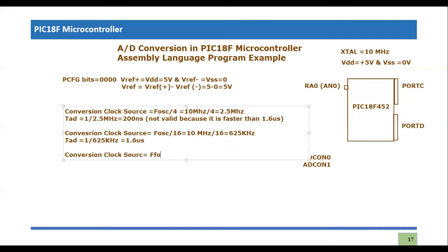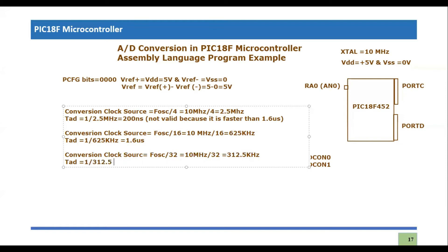Instead of 16, I'll try a bigger value: Fosc/32. So 10 MHz scaled down by a factor of 32 gives approximately 312.5 kHz.